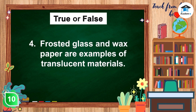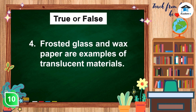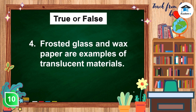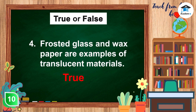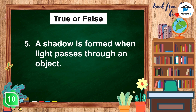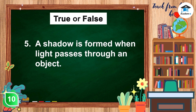Opaque materials do not allow light to pass through them. Frosted glass and wax paper are examples of translucent materials — the answer is true. A shadow is formed when light passes through an object — the answer is false.